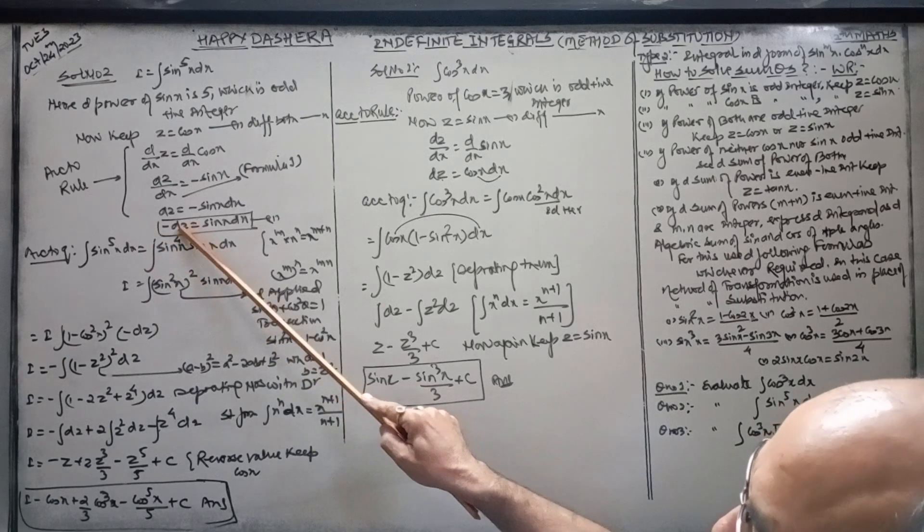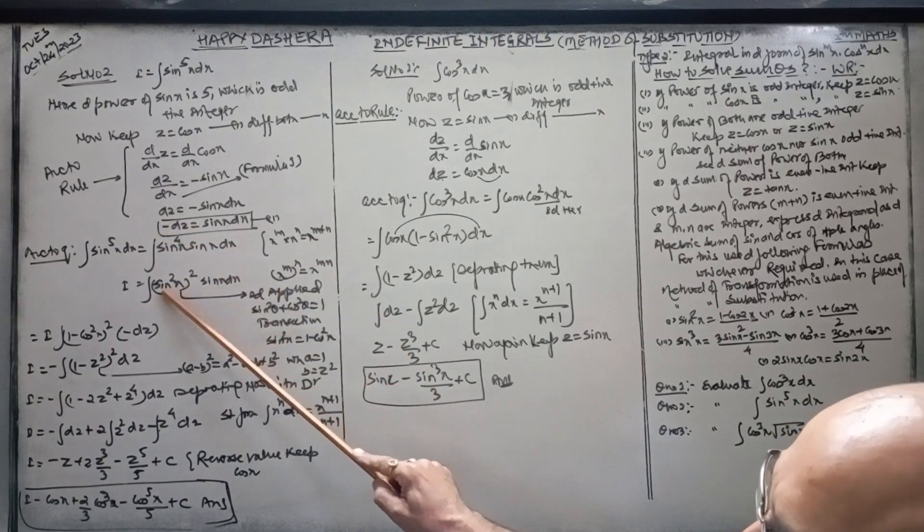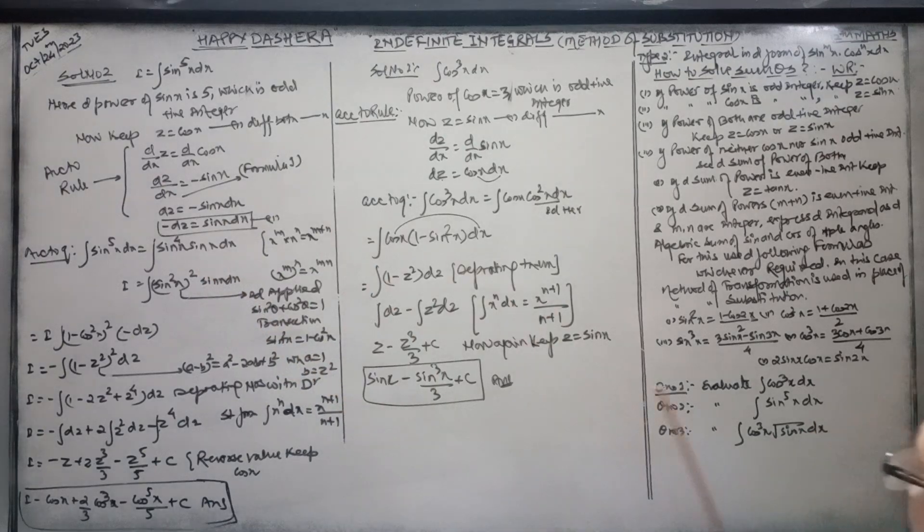Again, sin x will be written. Sin² x times sin² x is equal to sin⁴ x. Here is the multiple.